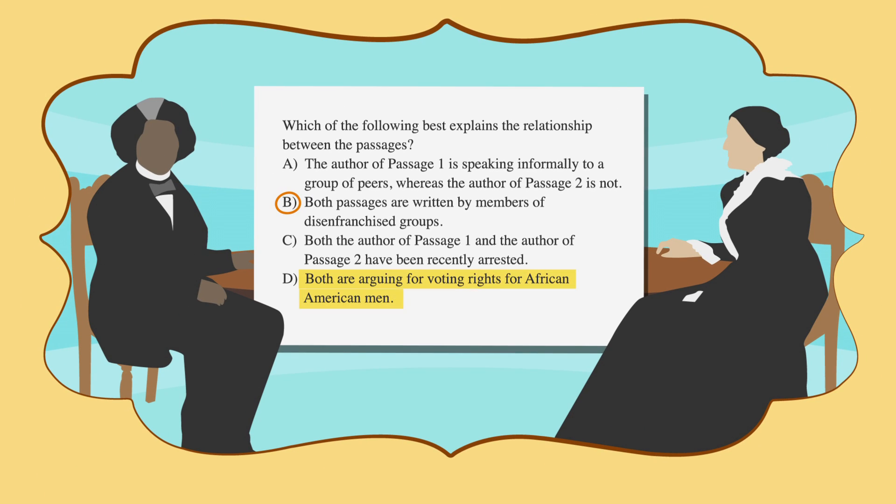Take a look at answer choice D. Both are arguing for voting rights for African American men. From reading the blurb, we know that Susan B. Anthony was fighting to get women the right to vote. If we read the full passage, we would know that this statement doesn't argue for voting rights for any men. That one little word, men, makes answer choice D incorrect.